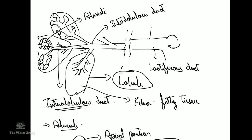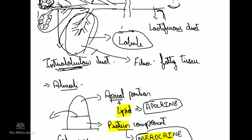The lactiferous ducts drain into the lactiferous sinus. This forms the interlobular system, which can be divided into multiple lobules. These lobules consist of alveoli lined by columnar epithelium. So the order is: alveoli, intralobular ducts, interlobular ducts, lactiferous ducts, and lactiferous sinus — for storage of milk.